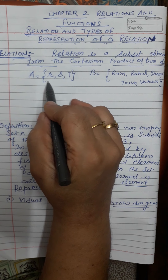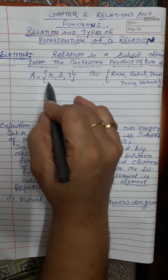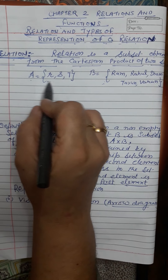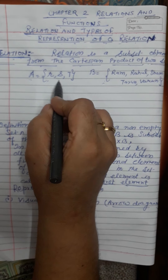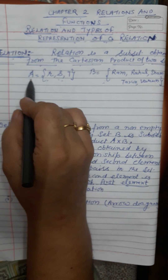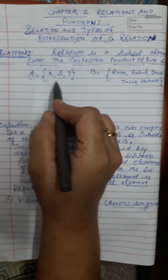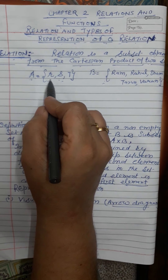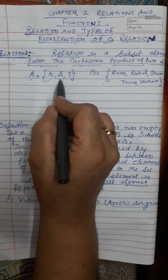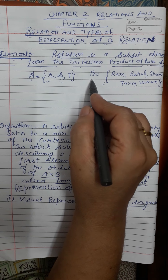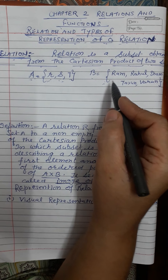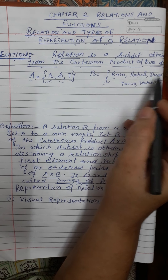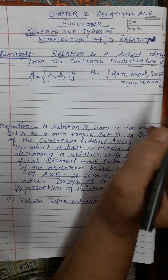It is a subset of the set obtained from the Cartesian product of two sets. We have two sets: Set A contains elements R, S, and T, and Set B contains Ram, Rahul, Shyam, Tarun, and Varun.